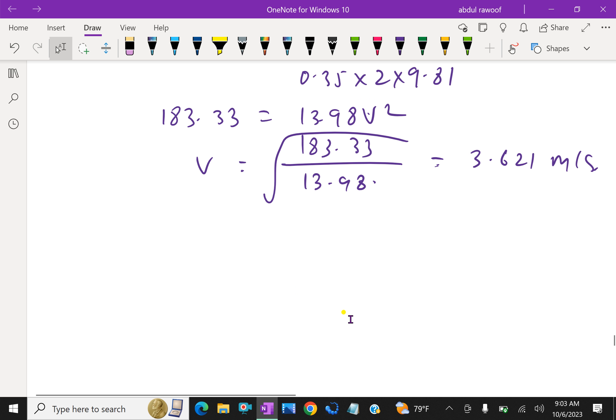We know that flow rate Q equals cross area into velocity. Q equals π by 4 d squared times velocity, which is π by 4 times 0.35 squared into 3.621, which gives 0.348 meter cube per second.